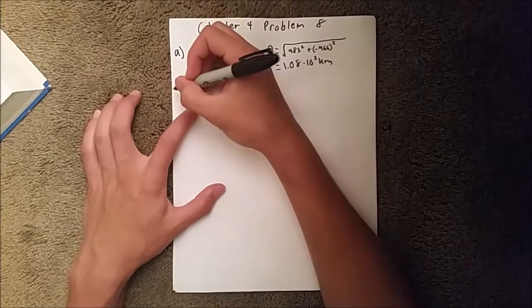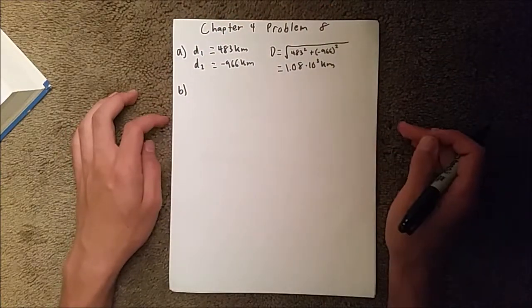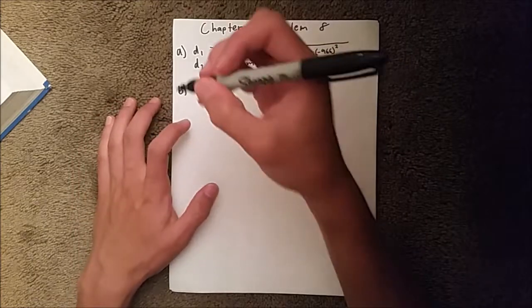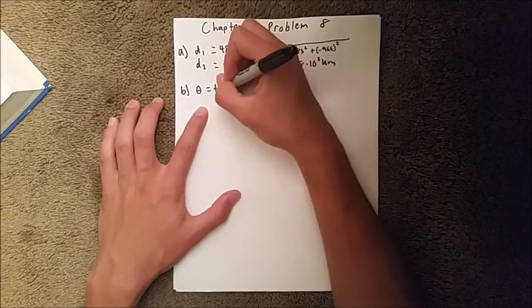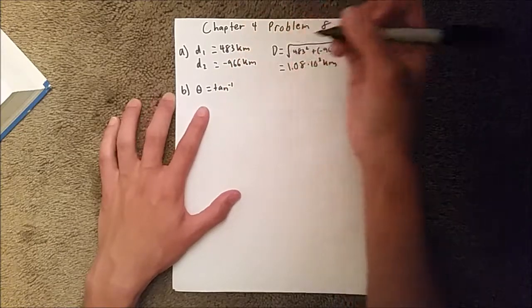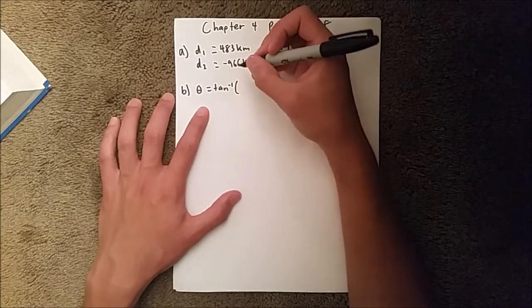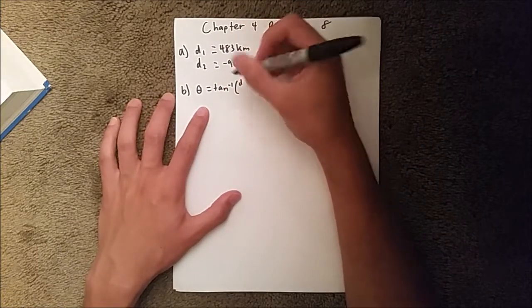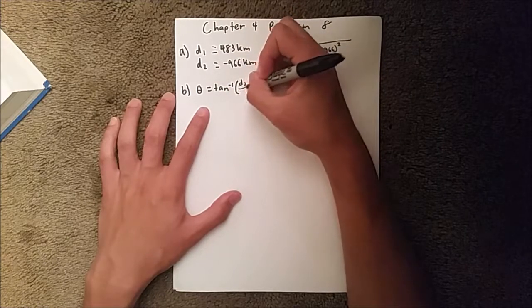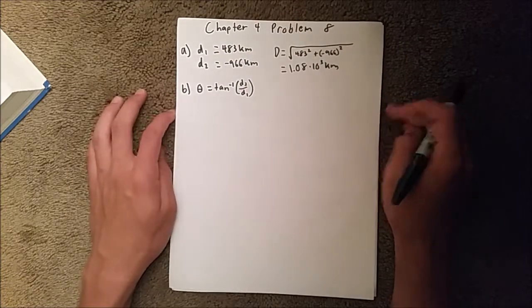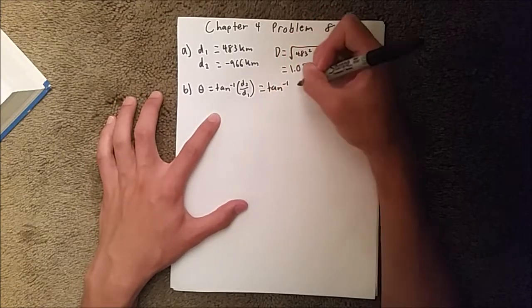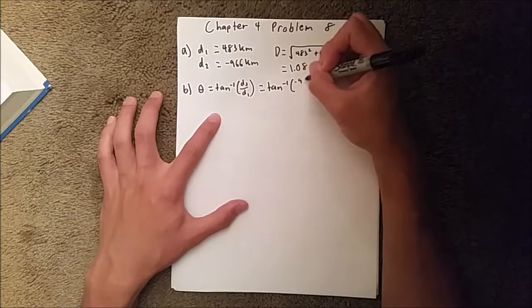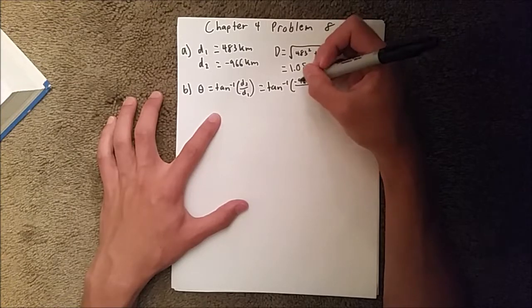Now, for part B, we are asked to find the direction. And so, our direction formula is angle equals the inverse tangent of trip 2 over trip 1. And so, when you put that in your calculator, this will be the inverse tangent of negative 966 over 483.